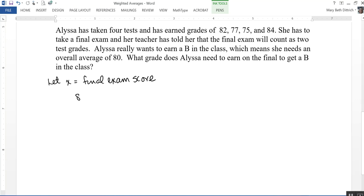So she has already scored an 82, a 77, a 75, and an 84. So if we were to average that, I would just divide that by 4 and that would give me her current average.